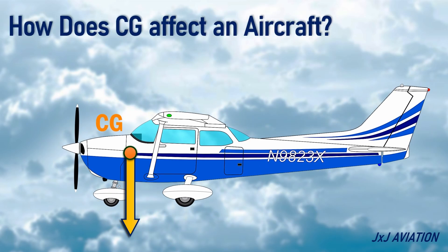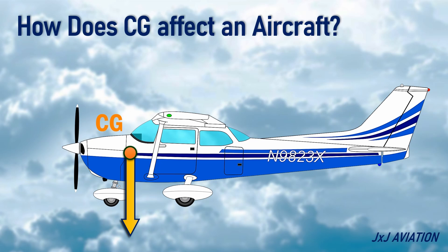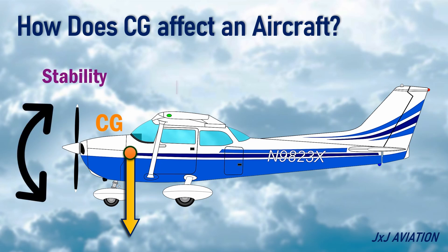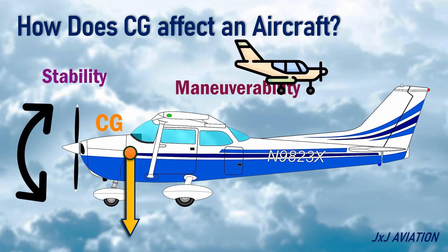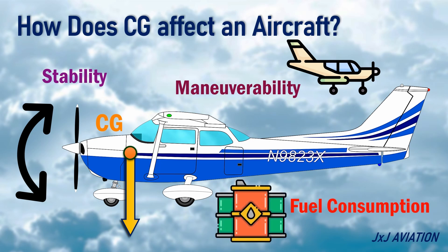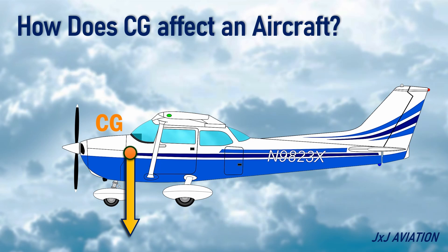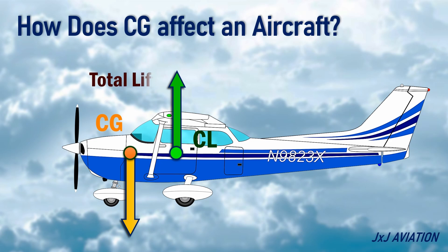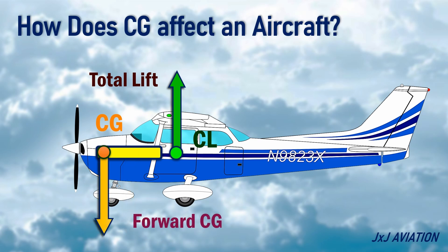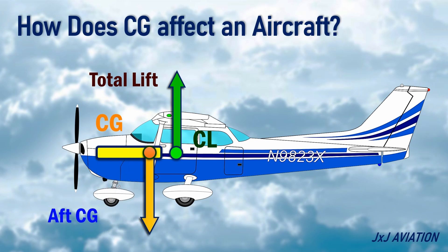How does center of gravity affect an aircraft? The center of gravity has an influence on the aircraft's stability, maneuverability, and fuel consumption. For an aircraft to be stable, the CG must be in front of the center of lift. The center of lift, or CL, is the point where the total lift of the aircraft acts. The CG may shift along a certain range in front of the CL. When the CG is towards the forward section of the range, it is called forward CG. If the CG is near the aft section, it is called aft CG.